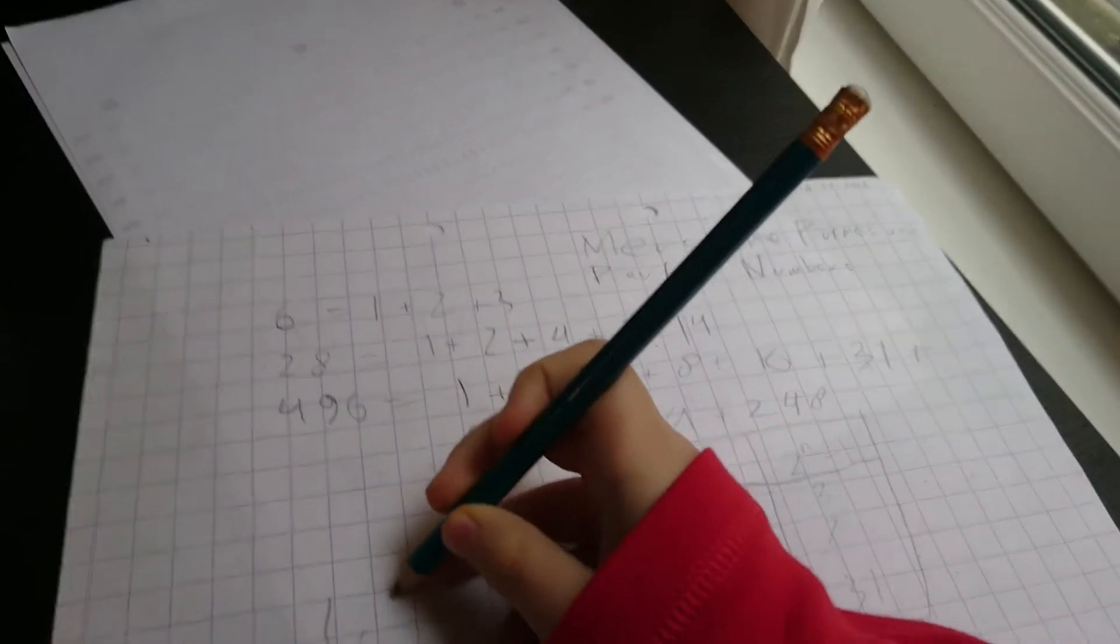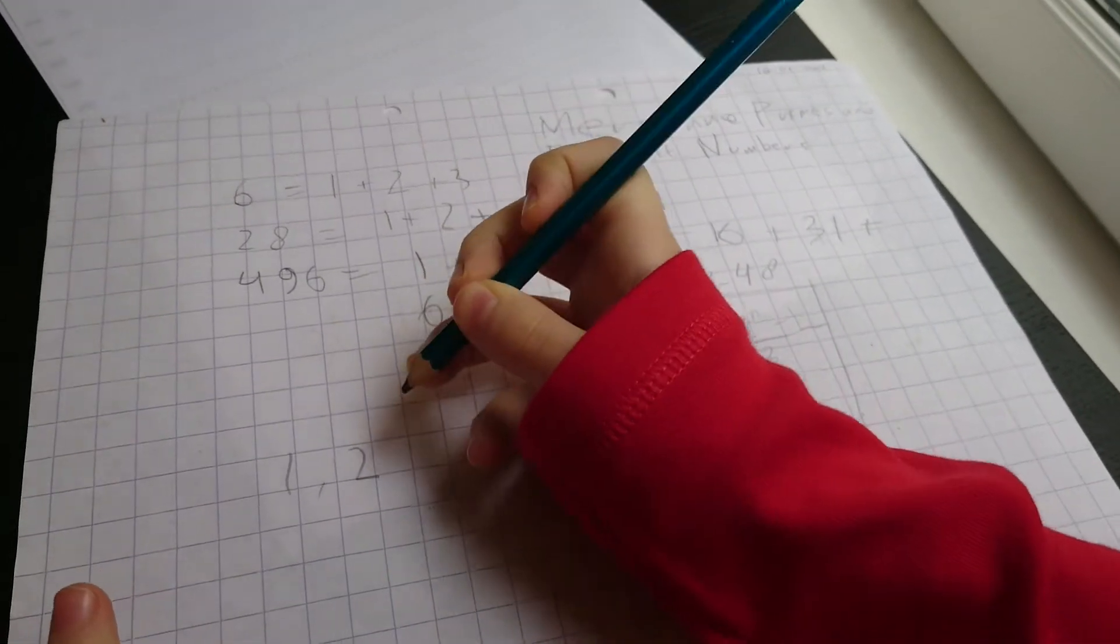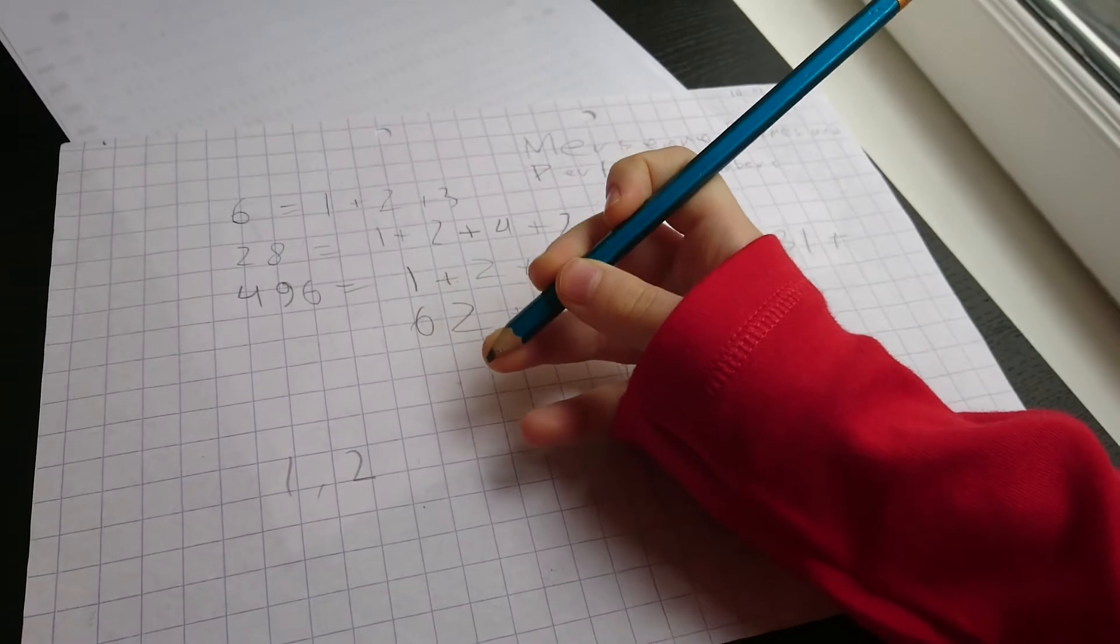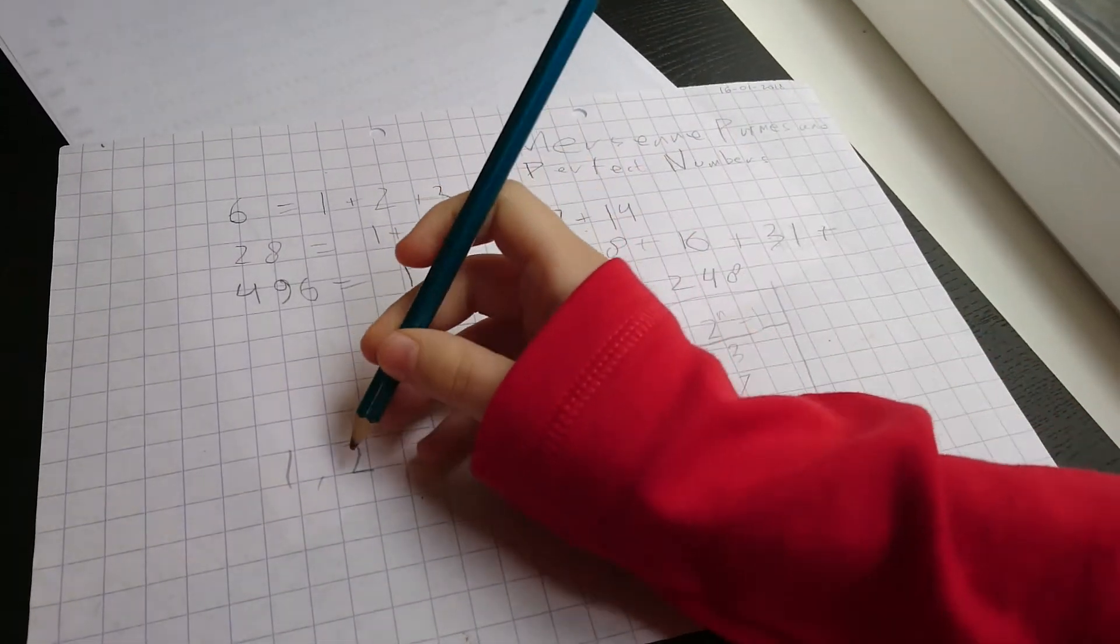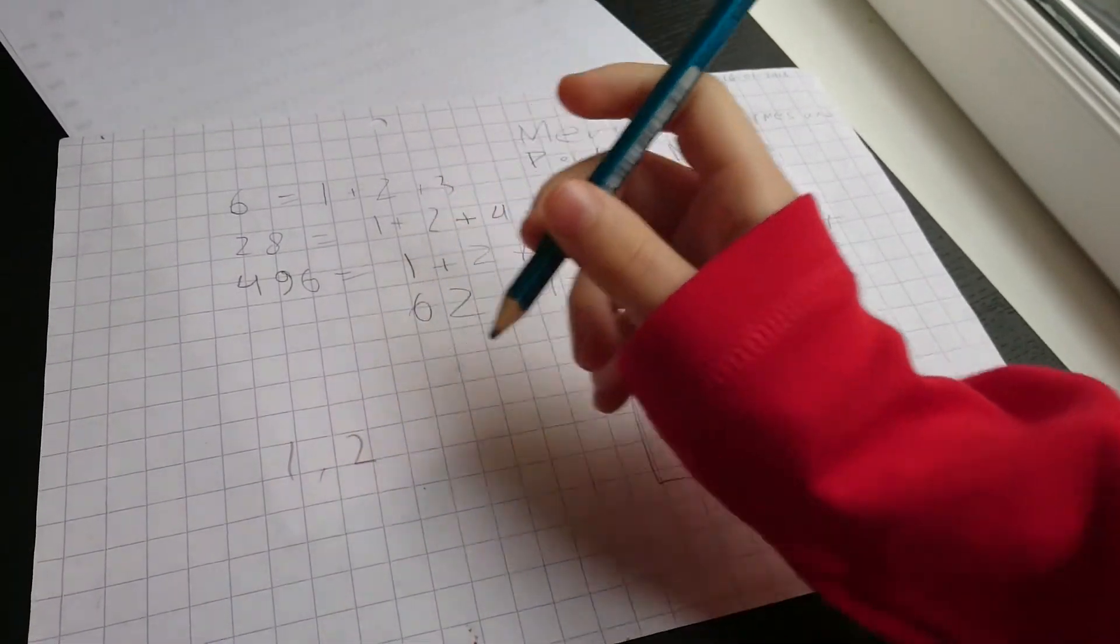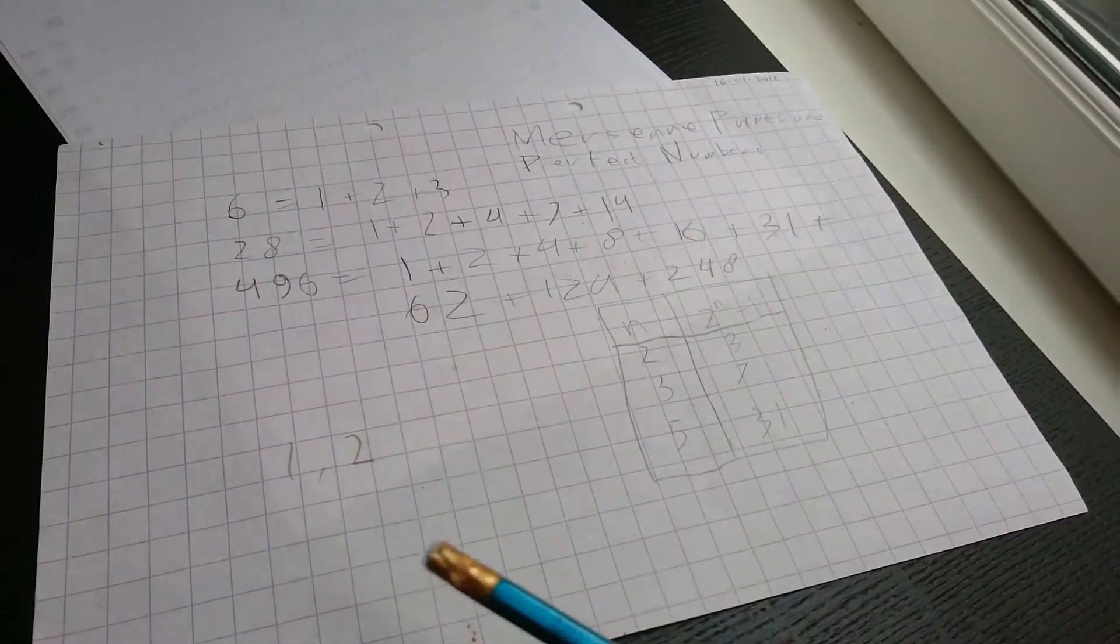If we double 1, we get 2. Well, that's what it means for something to be even. So if something is divisible by 2, that thing is even.